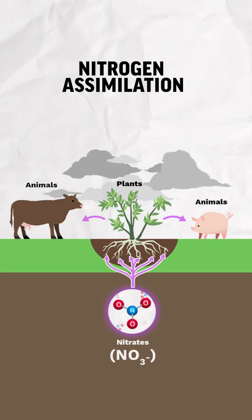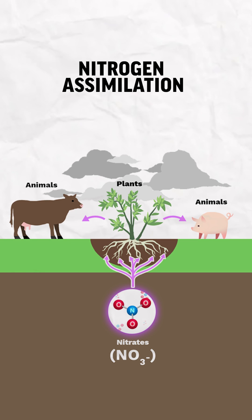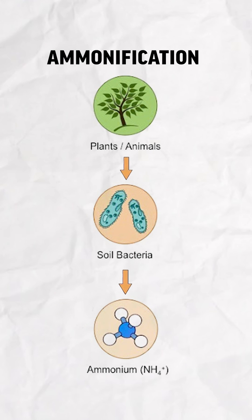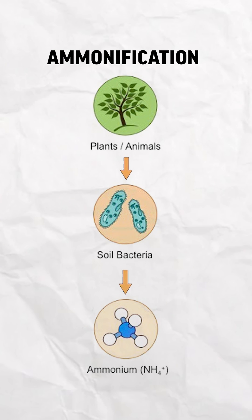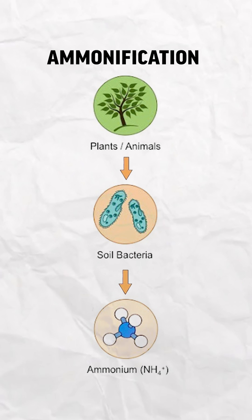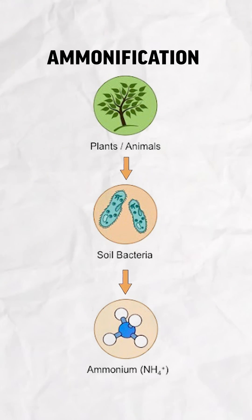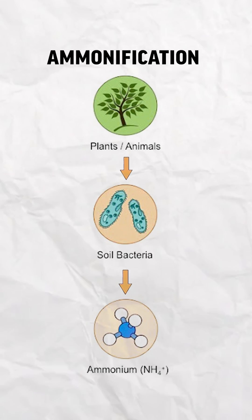When plants take in nitrogen from the soil and incorporate it into their tissues, we call it assimilation. And then when organisms die, decomposers in the soil convert this organic matter into ammonium in a process called ammonification. Scientists aren't always the most creative when they come up with these names.